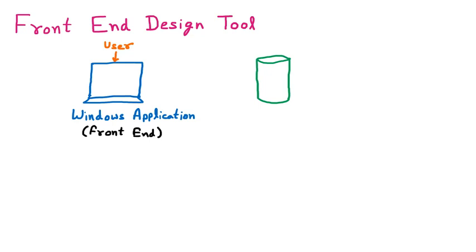Front end means the user is interacting with some system. The applications are developed — for example, when you go on the website of Facebook, that Facebook you are seeing is a front end. Let's say you are going on any mobile application like WhatsApp — that interface you see is again the front end. Or maybe you are developing some Windows application where the user is interacting — everything is the front end.